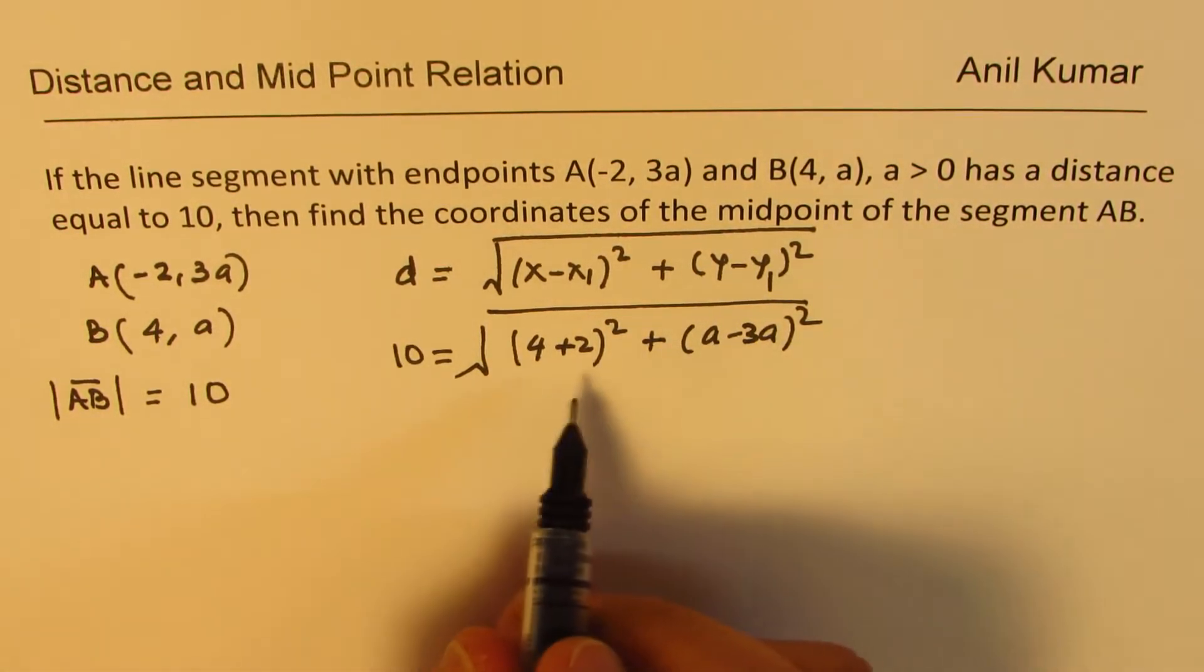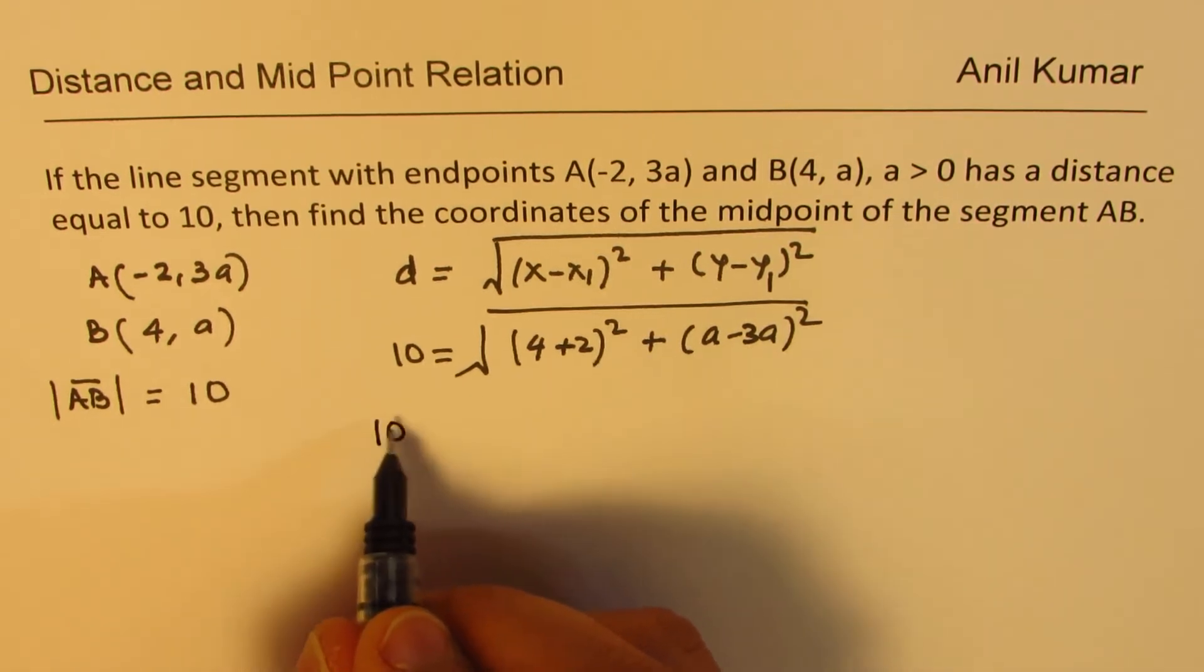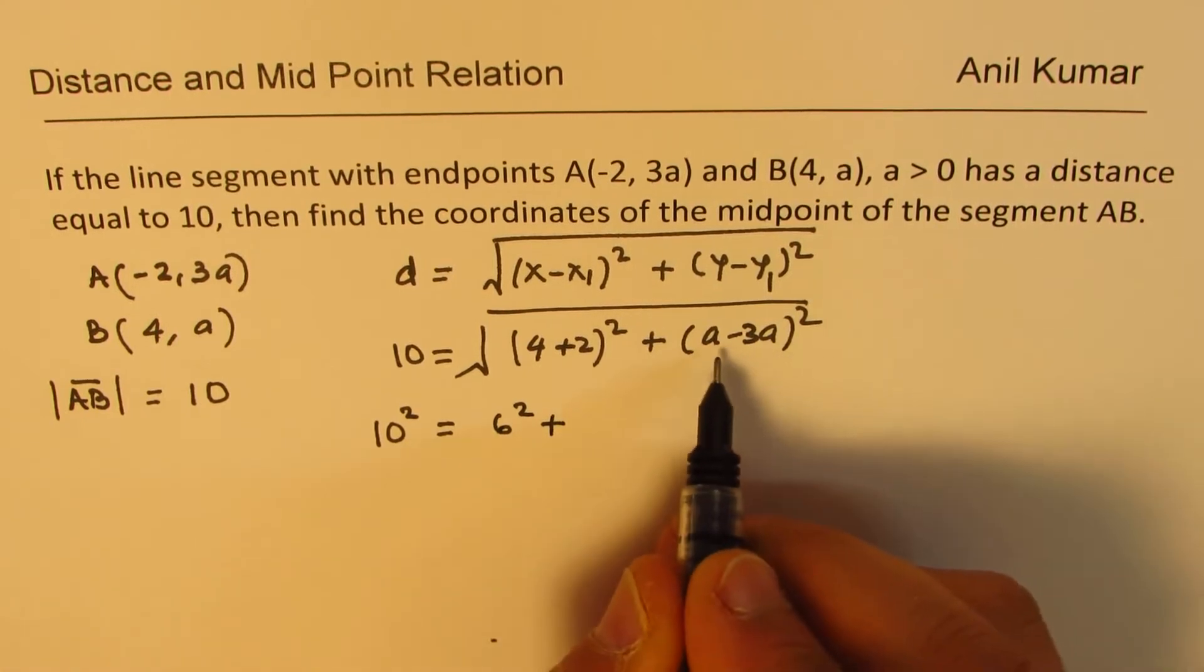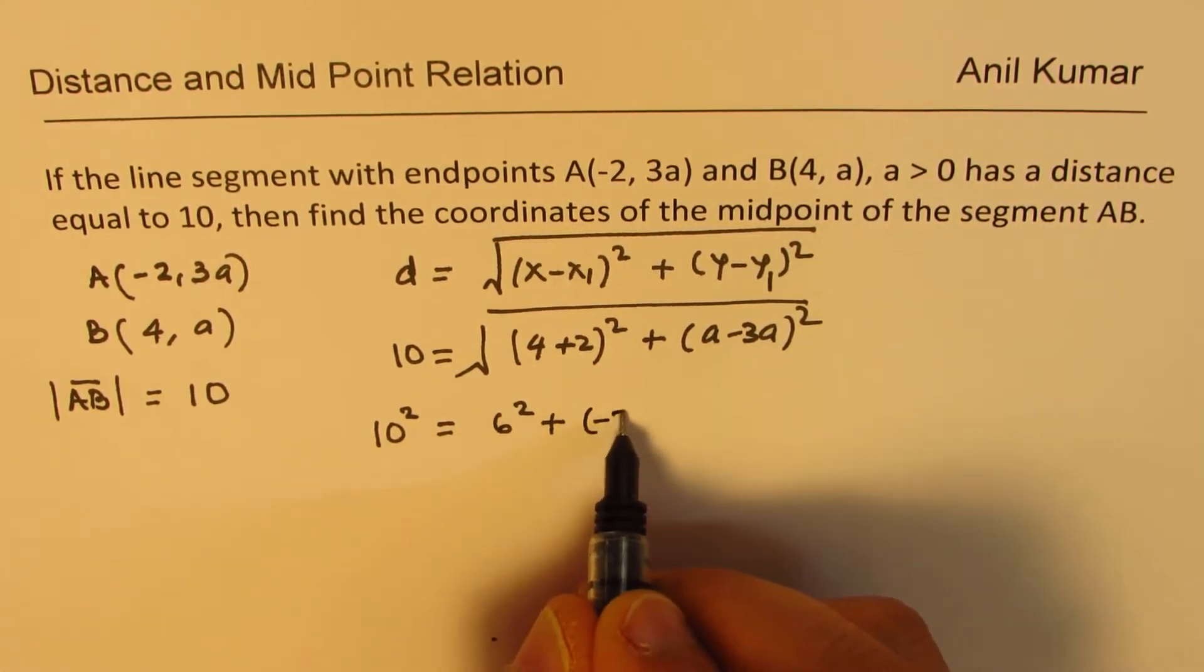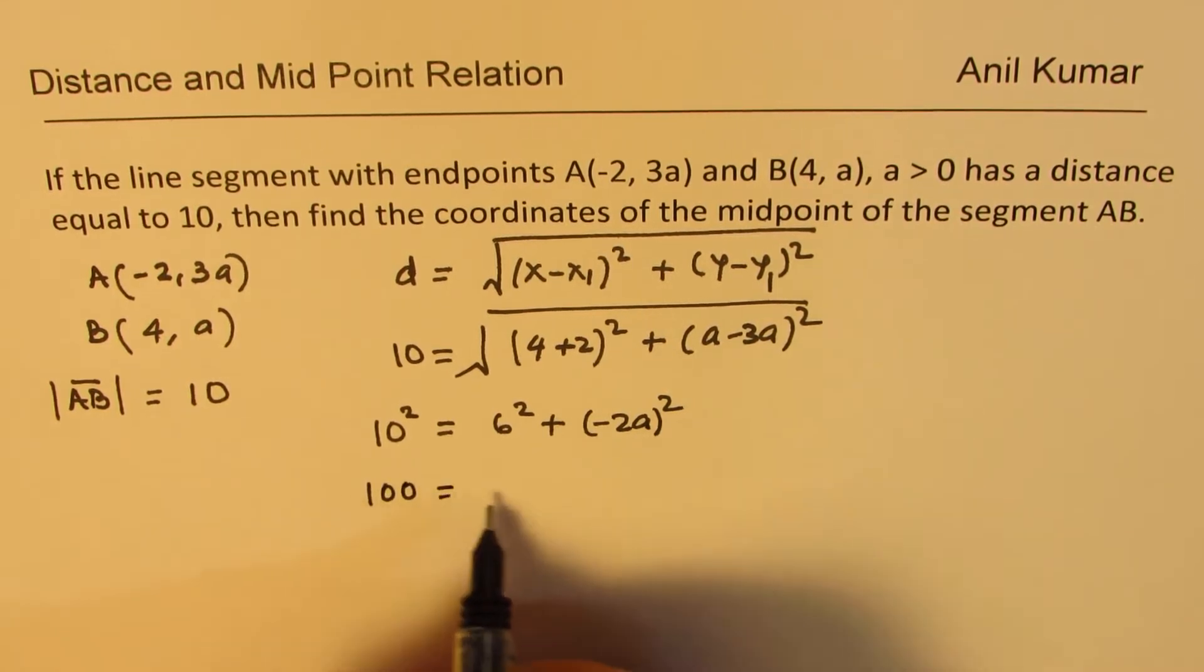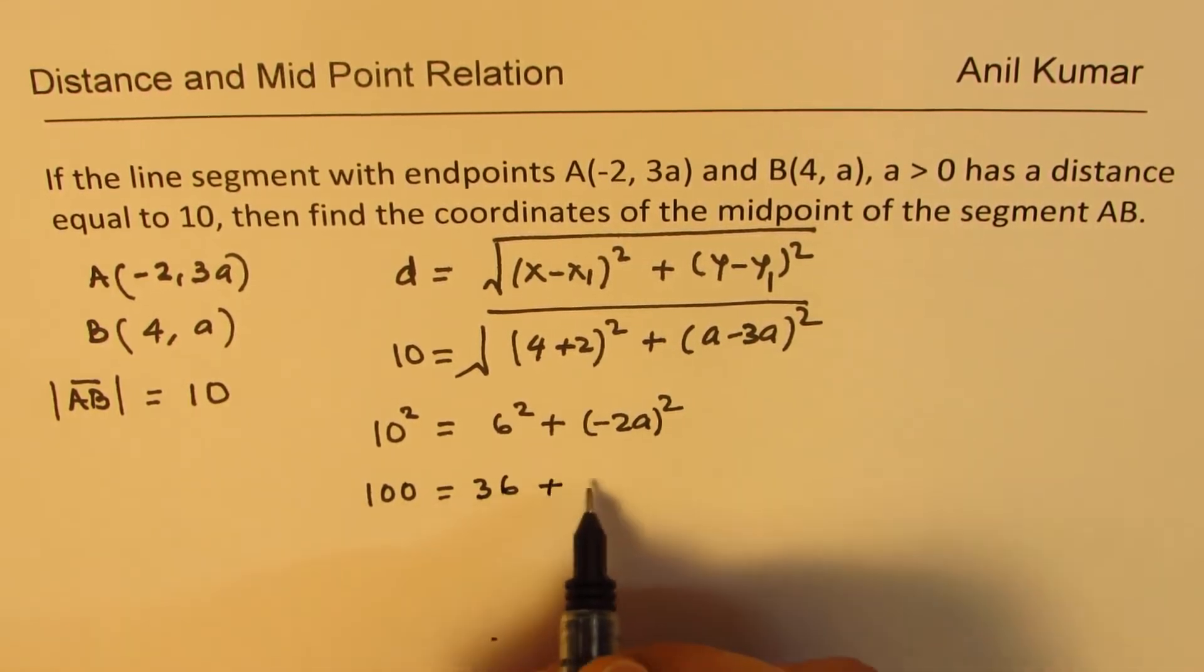Let's square both sides. We get 10² = 6² + (-2a)², which gives us 100 = 36 + 4a².